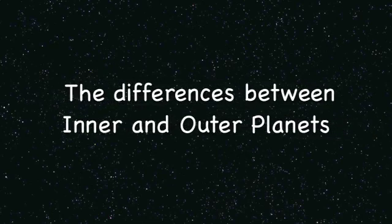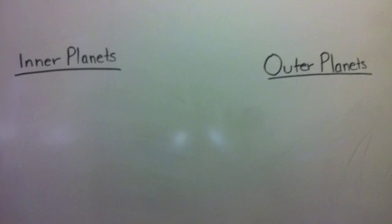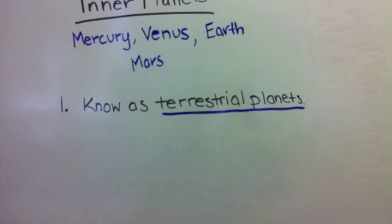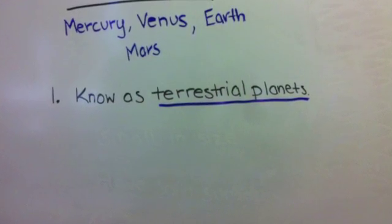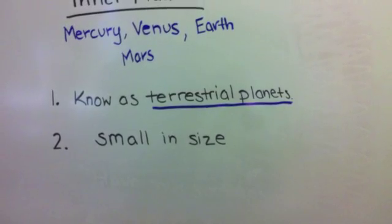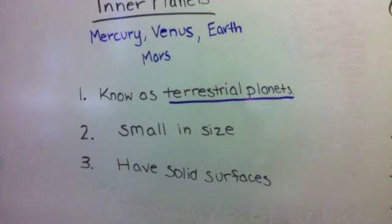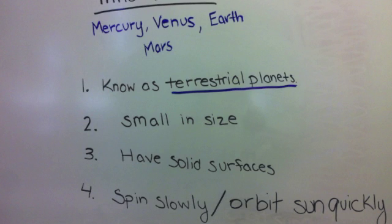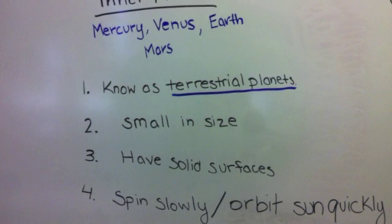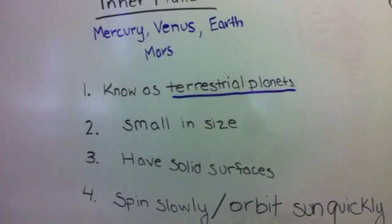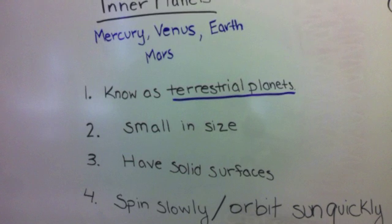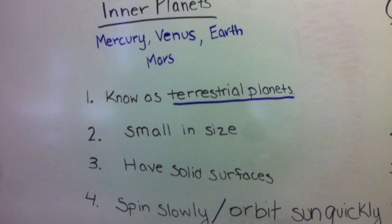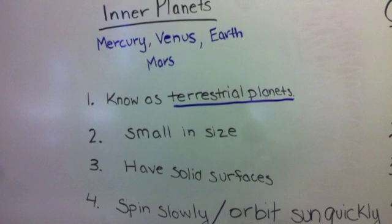Now we are going to transition into the differences between the inner and outer planets. The inner planets are relatively small in size and are composed of mostly rock surfaces. Compared to the outer planets, inner planets spin slowly. For example, Venus takes 243 days to spin on its axis. On the other hand, inner planets orbit very quickly because they are so close to the sun. It only takes Mercury 88 days to orbit the sun, compared to Earth's 365 days.